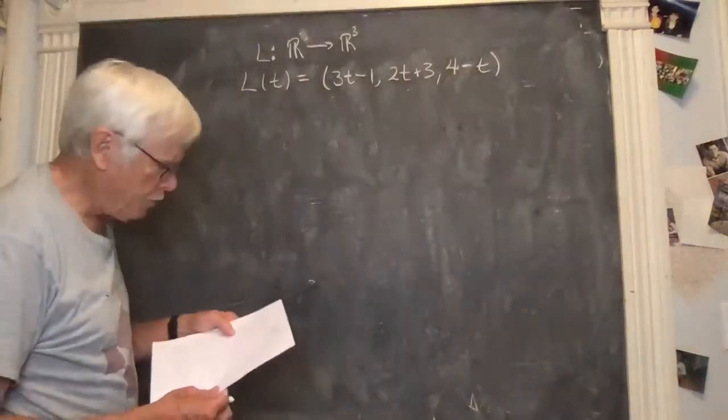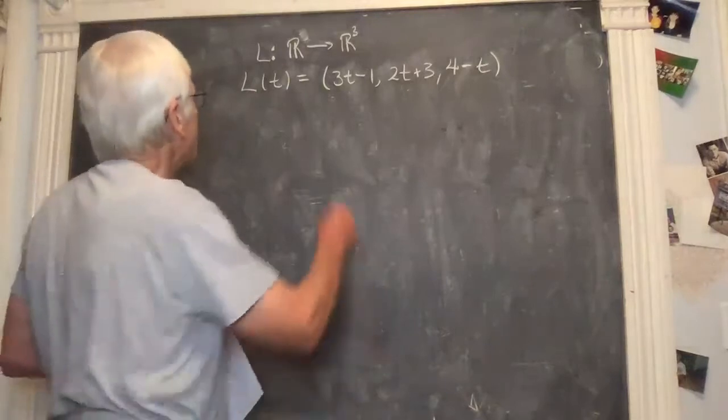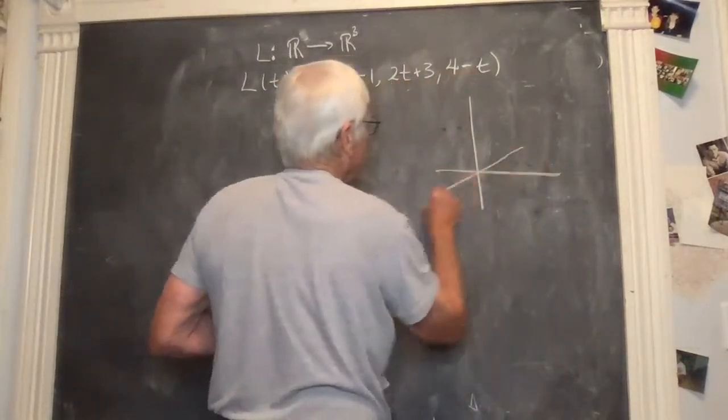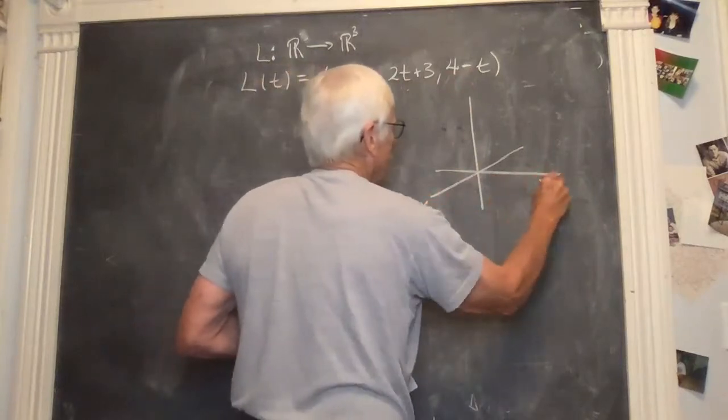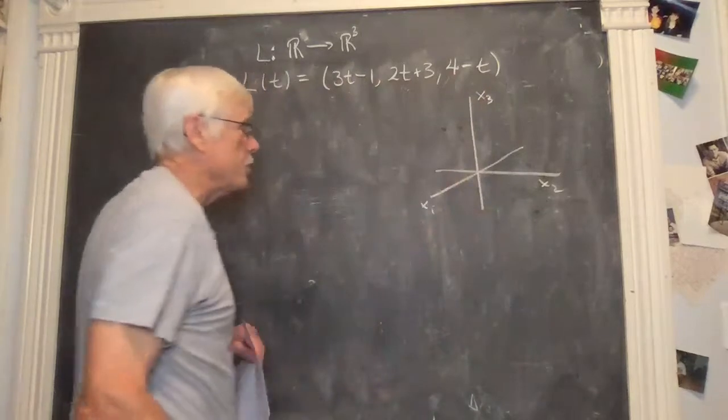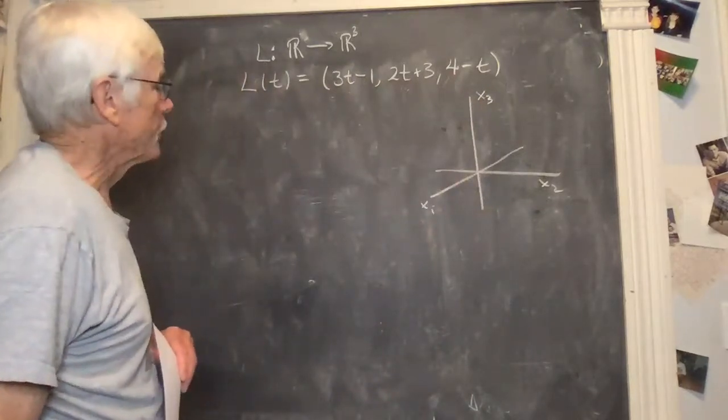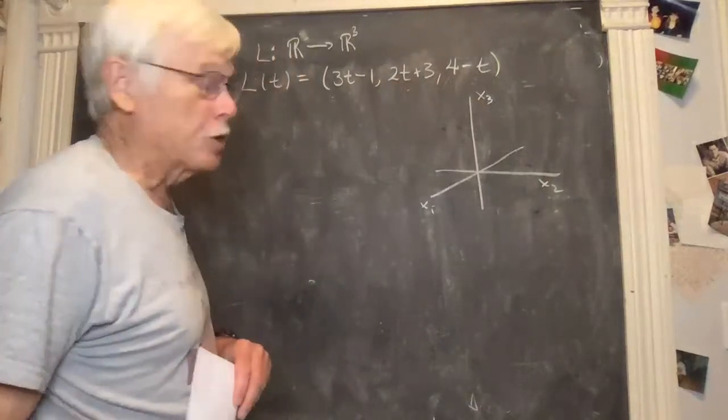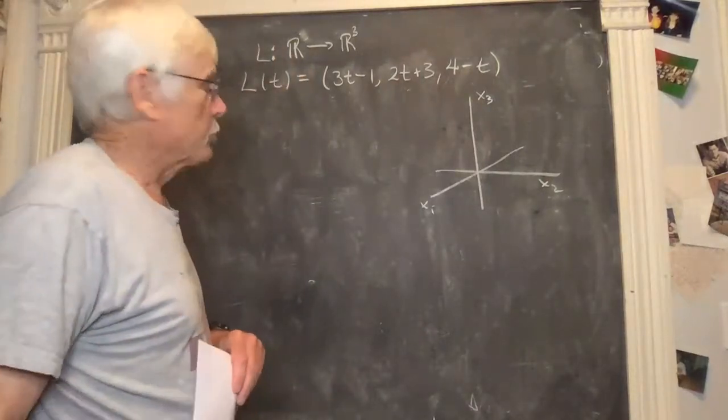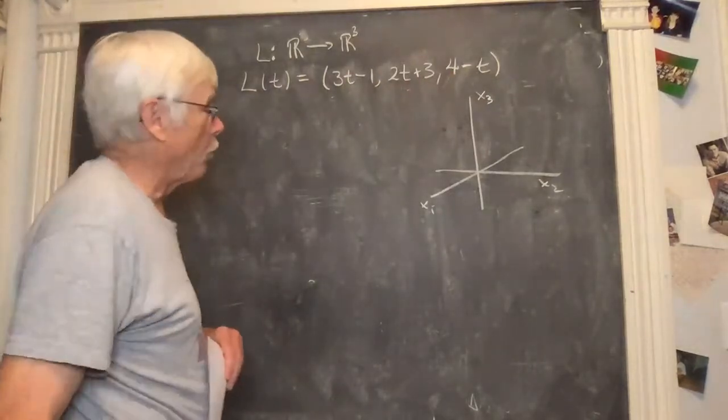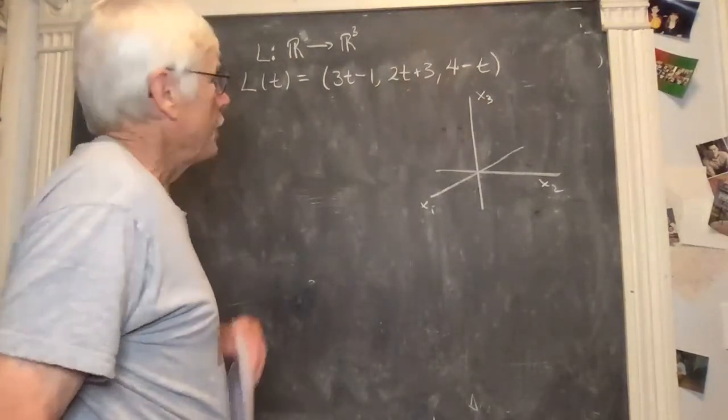You can tell it's a line because it's linear, and you can tell where it lies because it has three coordinate or Cartesian variables. Probably the easiest way to graph a linear function like this is to plot a couple points. Just two points will determine it, or we could figure out a point and the direction.